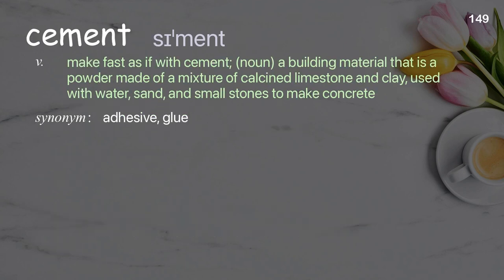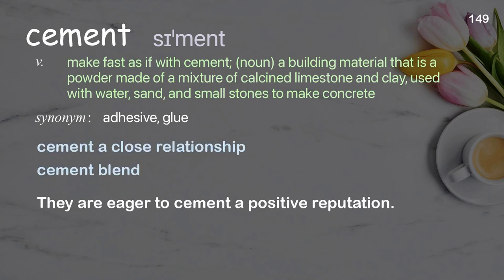Cement: verb: to make fast as if with cement; noun: a building material that is a powder made of a mixture of calcined limestone and clay, used with water, sand, and small stones to make concrete. Examples: cement a close relationship, cement blend. They are eager to cement a positive reputation.